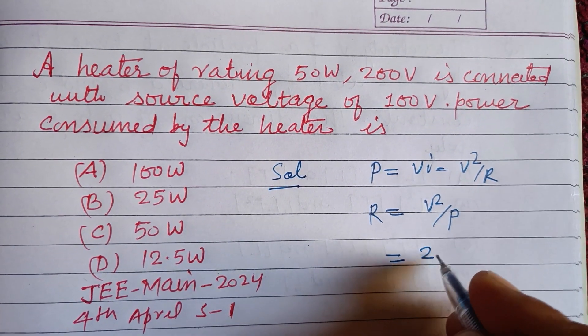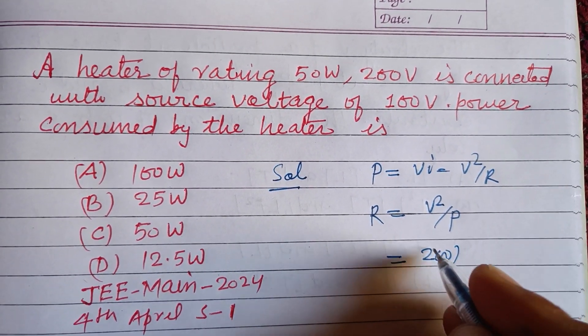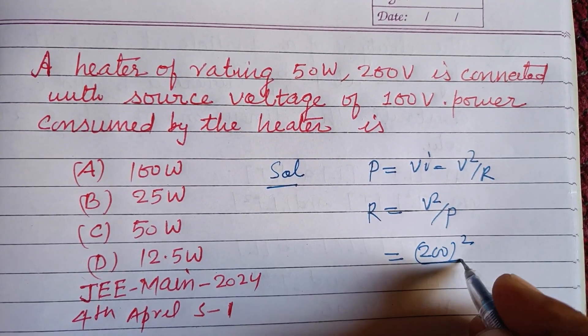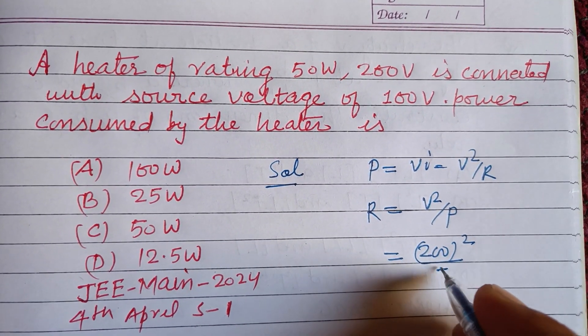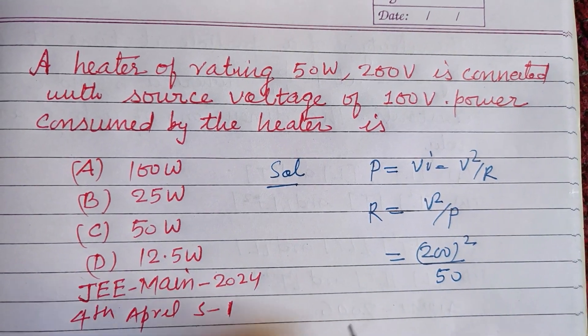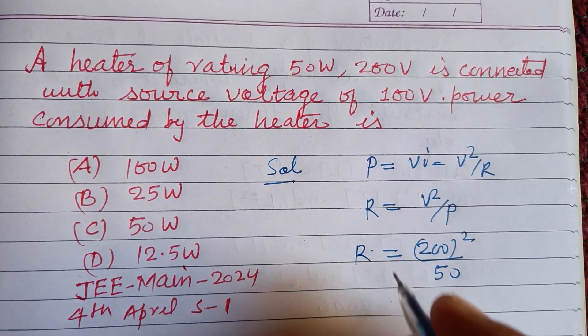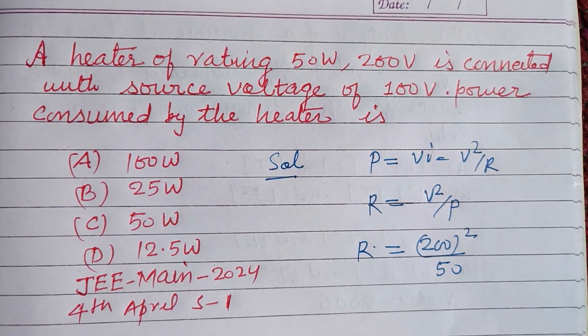V is given as 200 volt and power is 50 watt. So R = 200² / 50. This is the resistance of the heater.